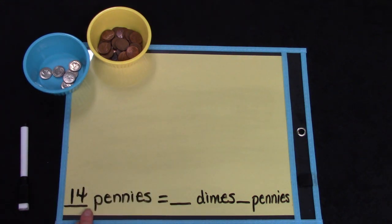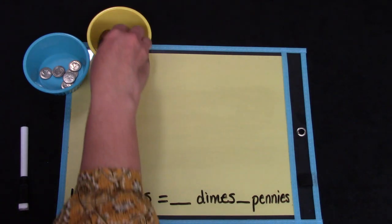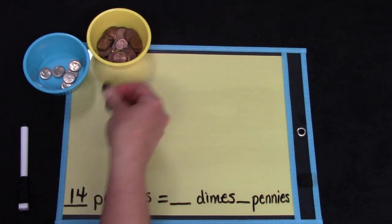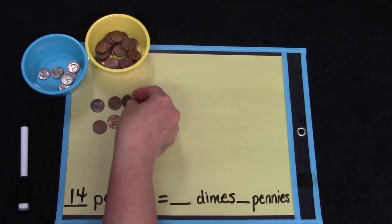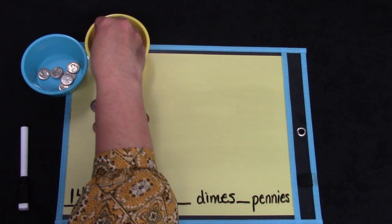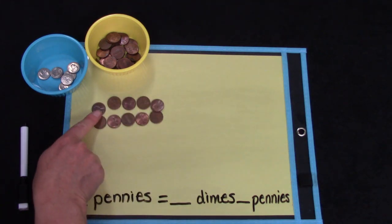If you have your pennies, I would like for you to count out 14 of them. When I count out my pennies, I am going to do them in little lines of 2 so I can count them by 2.